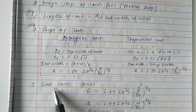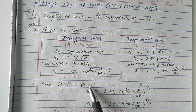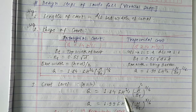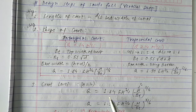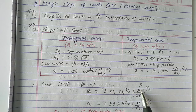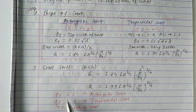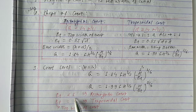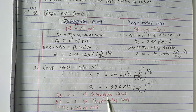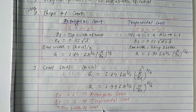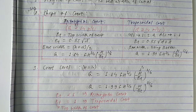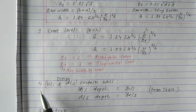In Step 3, we calculate the crest level — that is, the value of H. Using the discharge formula Q = 1.84 × L × H^(3/2) × (H/Bt)^(1/6), and since we already know L, Bt, and discharge Q, we can calculate the value of H (the crest level). For a rectangular crest, Bt is taken less than 1 (e.g., 0.8 or 0.9); for a trapezoidal crest, Bt is taken equal to 1. Bt is called the top width of crest.